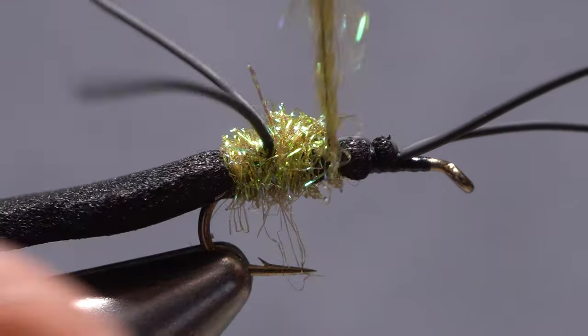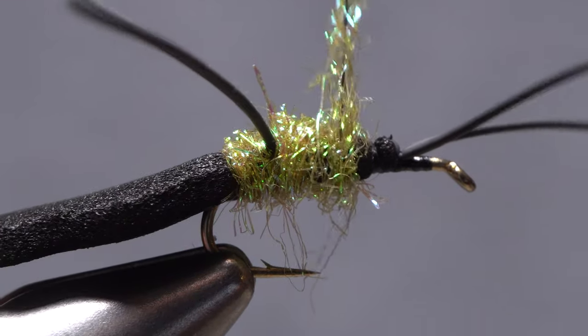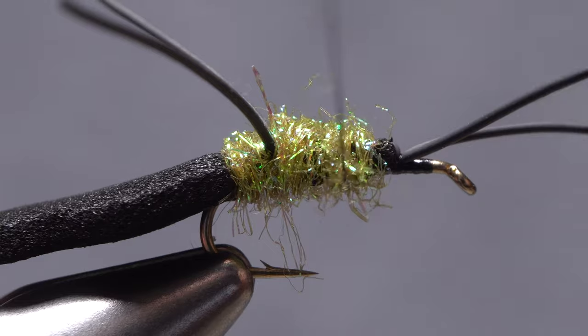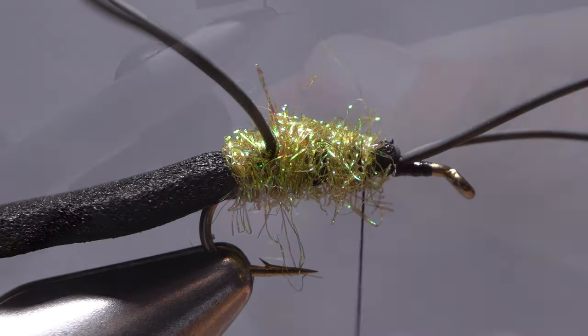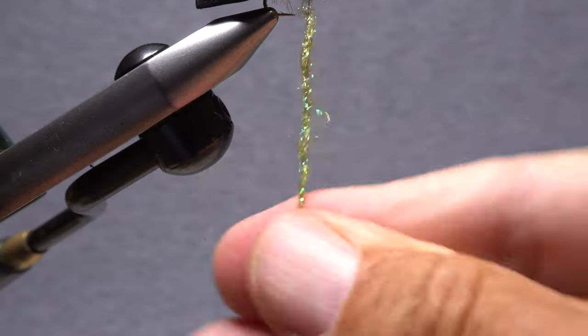Continue taking touching forward wraps up the shank. If you run out of dubbing go back to the packet, pluck out more dubbing, and use it to create another noodle on your tying thread.